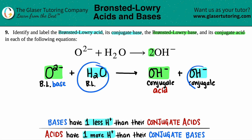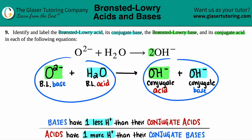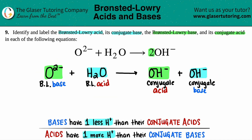Now we do the same thing with the other pair. H2O has two hydrogens and OH⁻ has just one. Acids always have one more hydrogen, so H2O has to be the acid and OH⁻ has to be the conjugate base. Notice that for each side you only have one acid and one base. So if you get an answer where you have two acids or two bases on one side, stop and go back — something went wrong. You're only allowed one base and one acid per side.